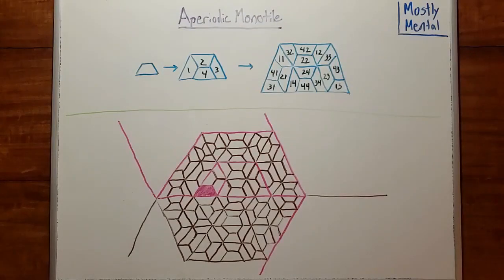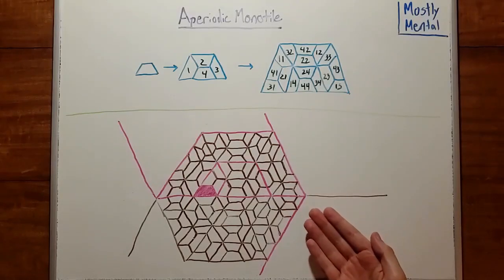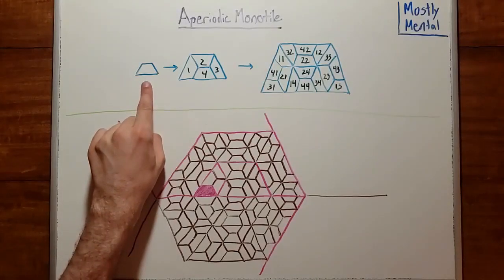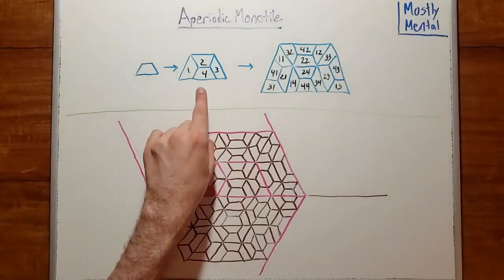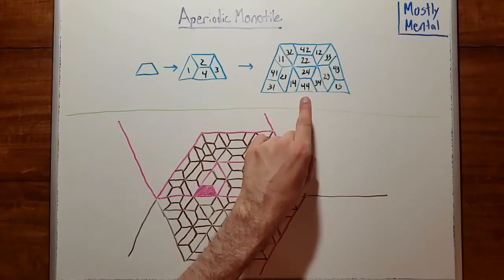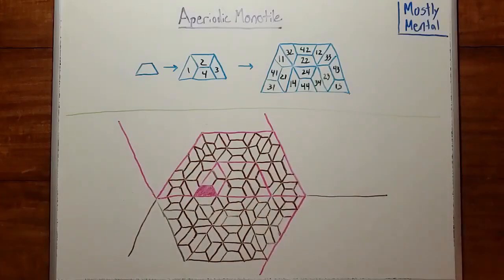But a tiling doesn't have to repeat. Here we have a tiling made of trapezoids. We start by arranging four trapezoids into a larger, similar trapezoid, and then we arrange four of those into an even larger one. And so on, going out forever.